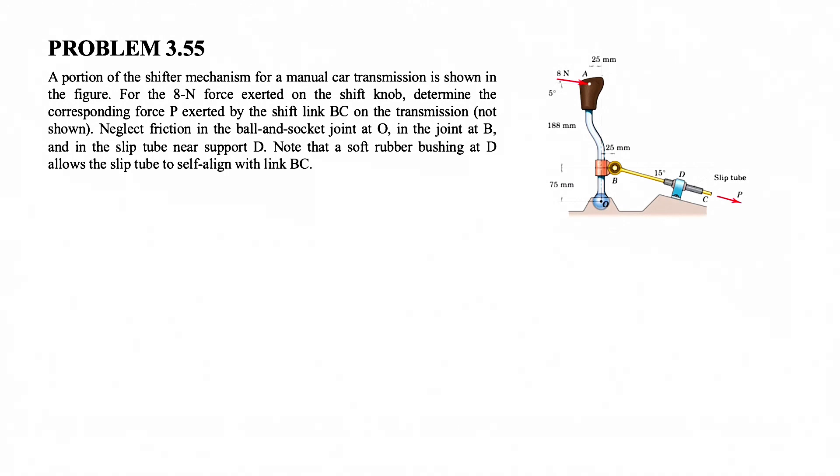We can neglect the friction of the ball and socket joint at point O and also the joint B and the slip tube near support D. We note that the soft rubber at point D allows the slip tube to self-align with the link BC.